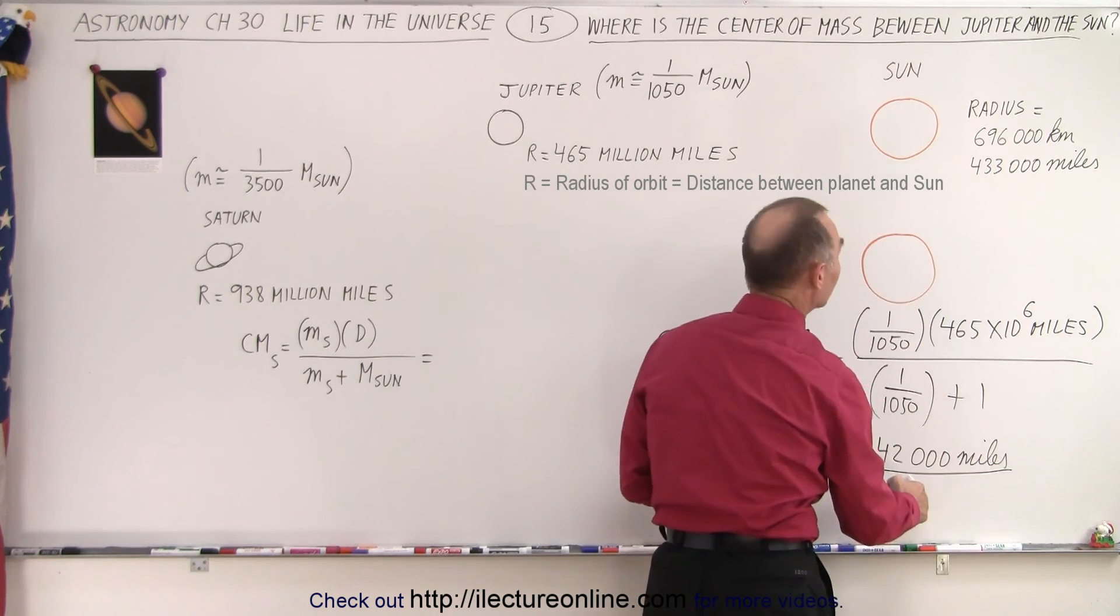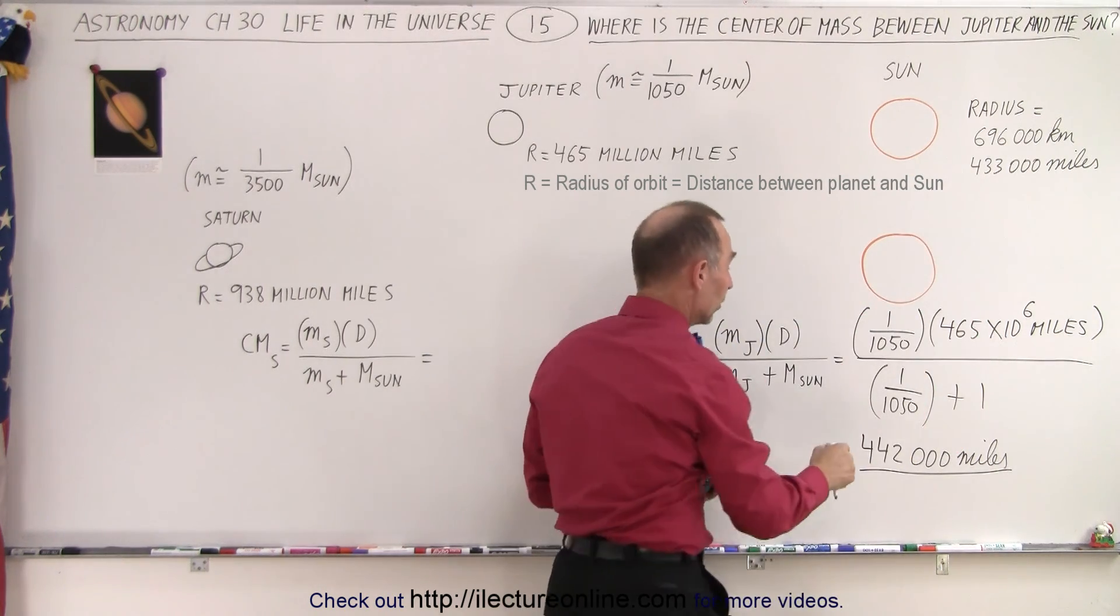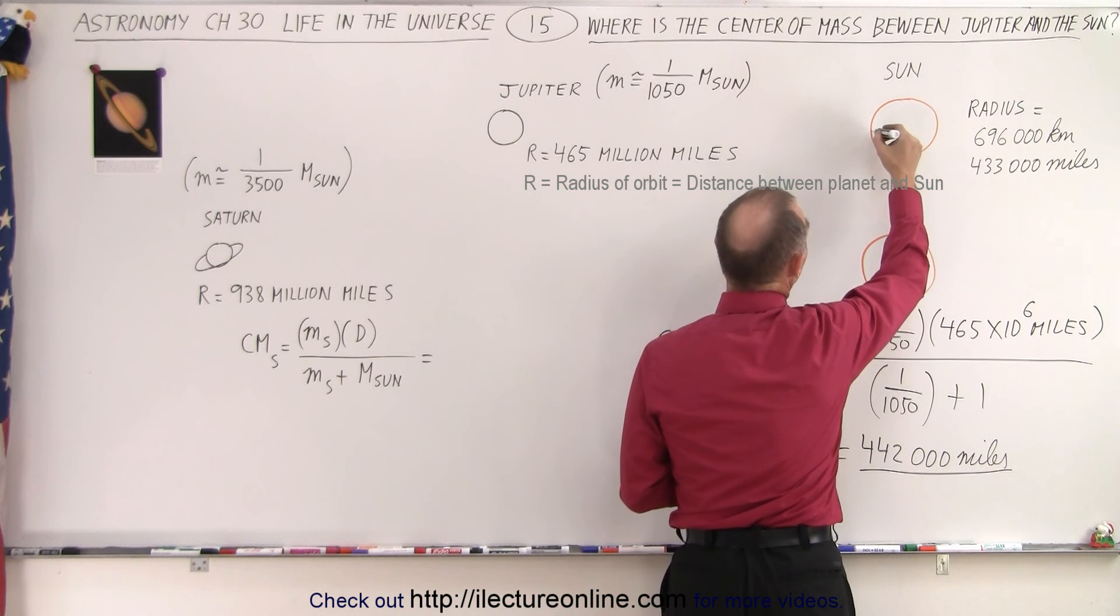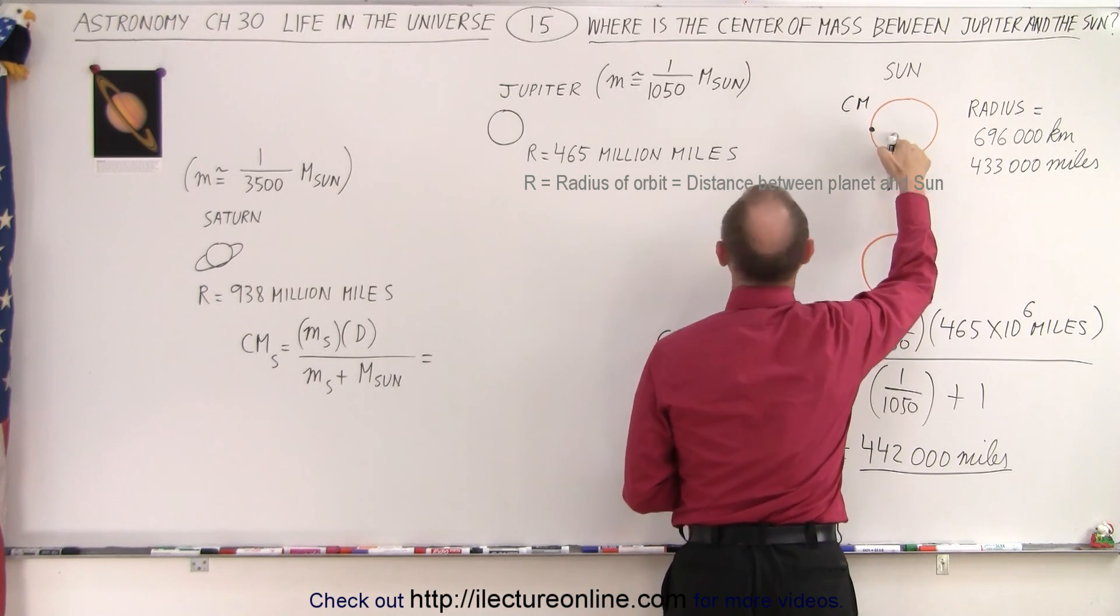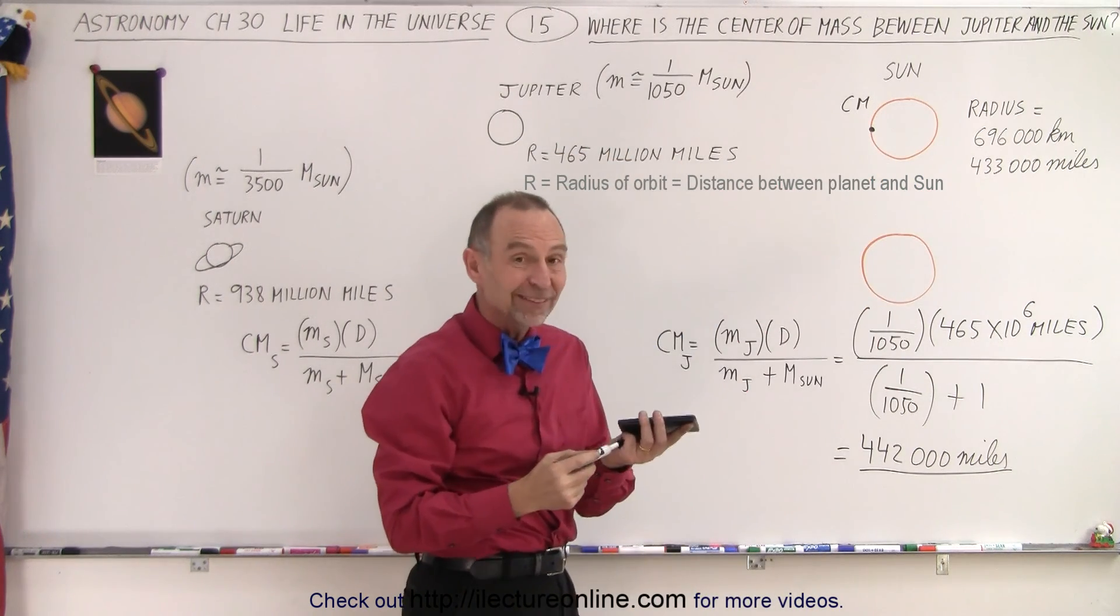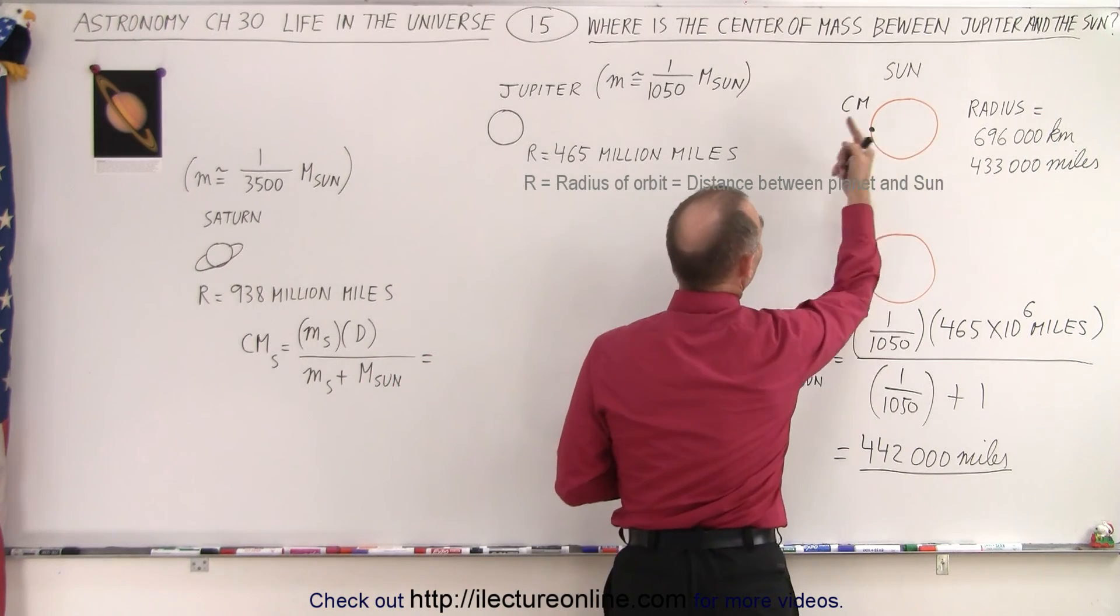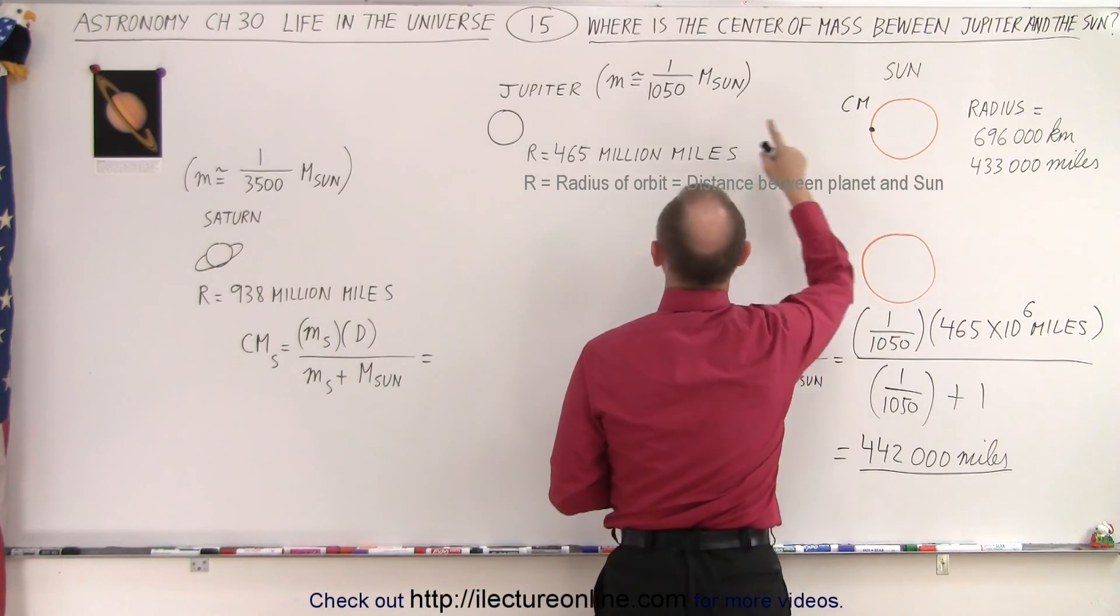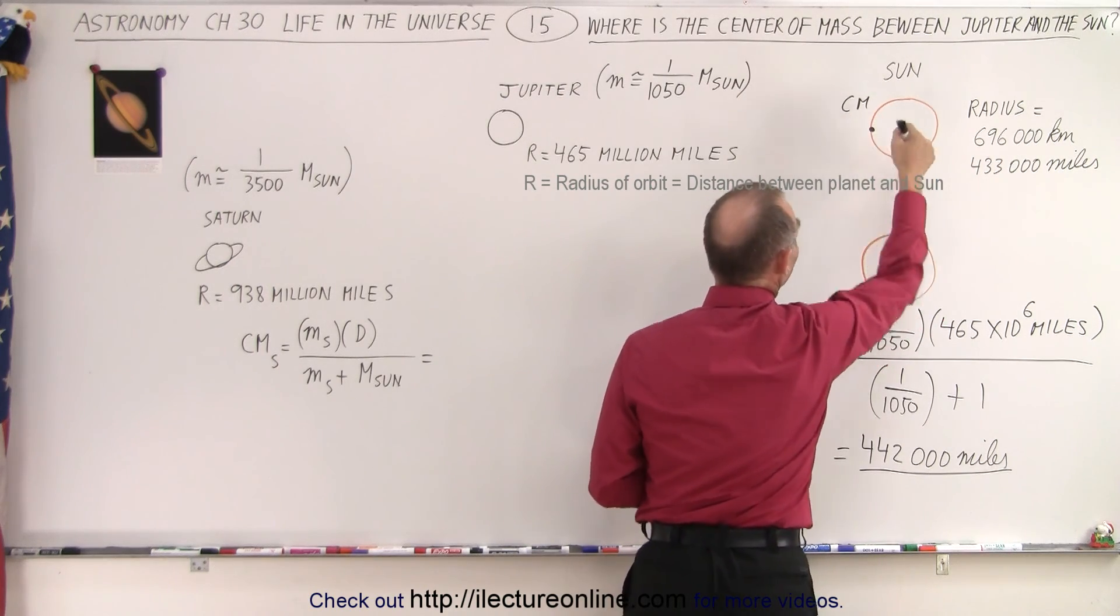Now compare that distance to the radius of the Sun, which means that the center mass is just about at the edge of the Sun. So the center mass between the Sun and Jupiter is right about the edge of the Sun. So essentially, if Jupiter was the only planet in the solar system, then the Sun would make little circles about that center mass, and of course Jupiter then also would be circling around this point, not the center of the Sun.